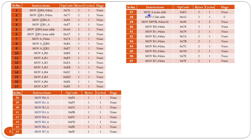MOV A, IRAM address (direct byte) — the content of this internal RAM address moves into the accumulator. MOV C, bit address — that bit moves into the carry flag bit, set or reset according to the bit address content. MOV DPTR, #16-bit — 16-bit data immediately moves into the DPTR register; operation code 90H. MOV R0, #immediate data — operation code 78H; the immediate data value moves into R0.